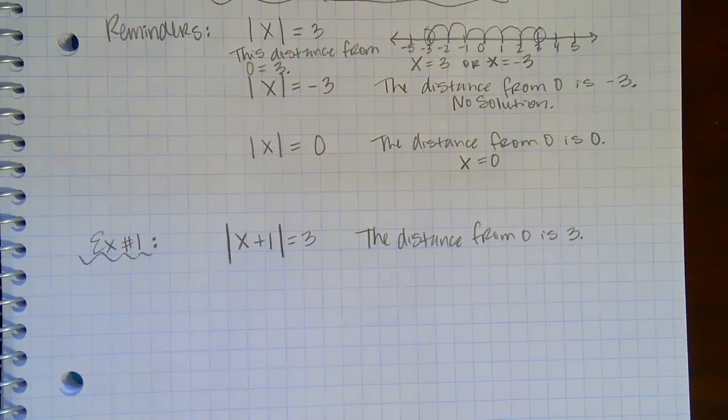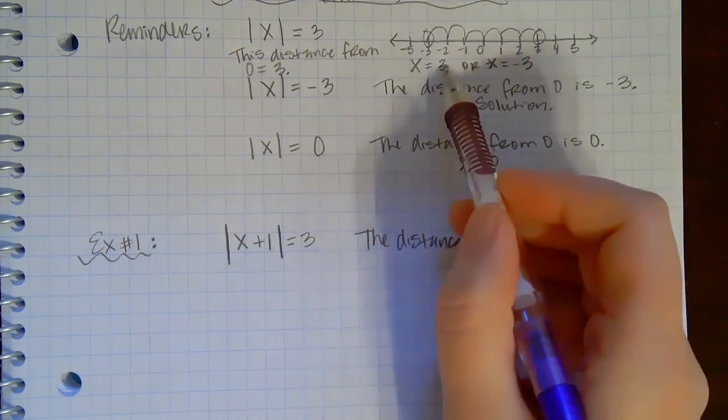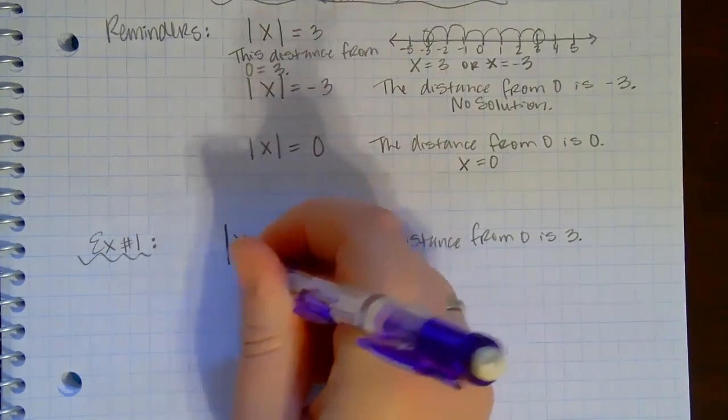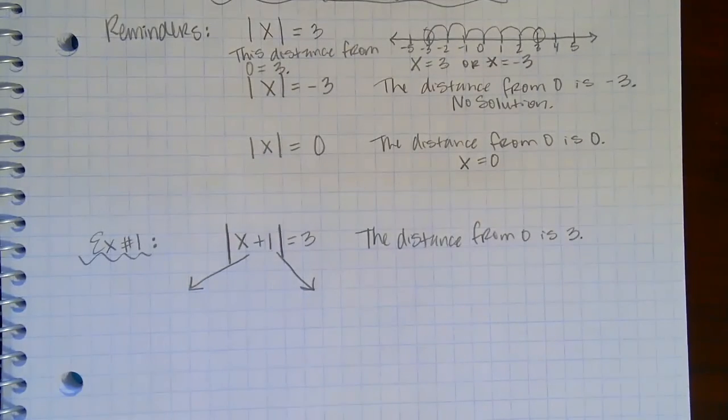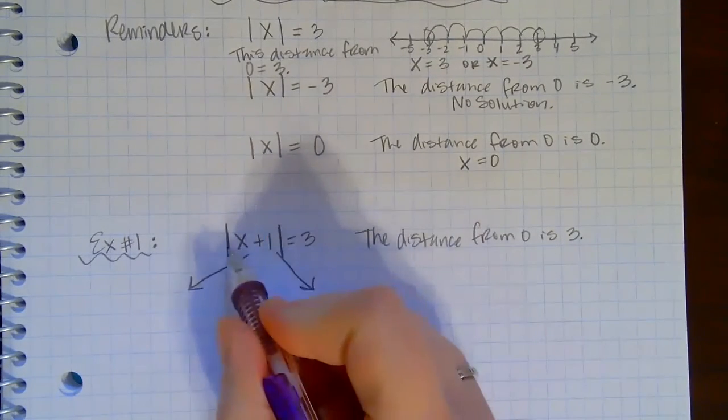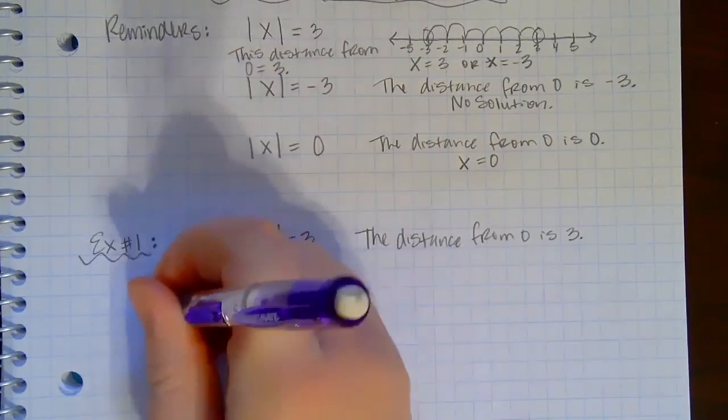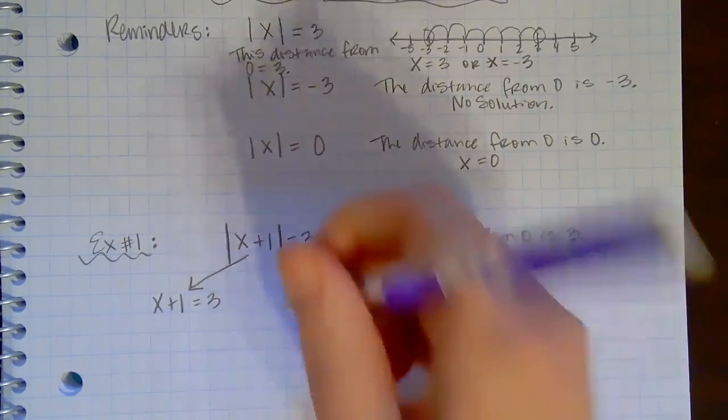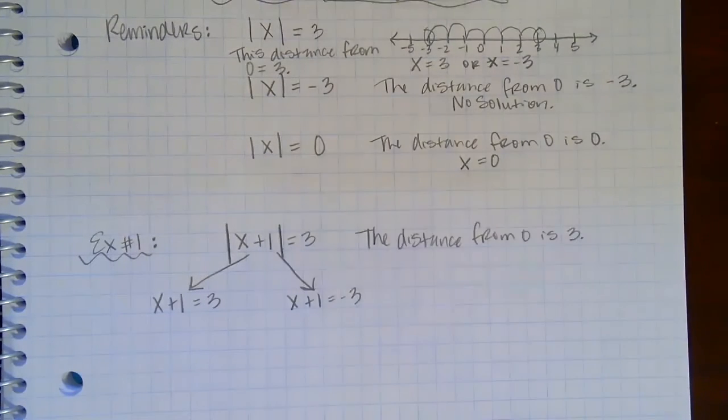So what I'm going to do is I'm going to split this up into two different equations: one that's equal to the positive 3 and one that's equal to the negative 3. Okay, so I'm going to draw an arrow and I'm going to split these into two different equations. The first one, I'm going to write it exactly like this but I'm going to drop the absolute value. So I'm going to say x plus 1 could equal a positive 3, or x plus 1 could equal a negative 3.